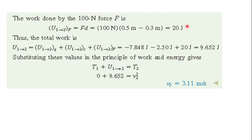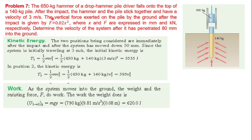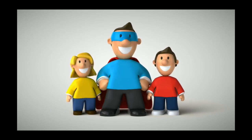Calculating total work and applying the work-energy principle: T1 plus U1-2 equals T2. The initial kinetic energy is zero, so we solve for the final kinetic energy to get v2. This completes this numerical — another video covers more work-energy principle problems.